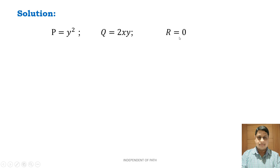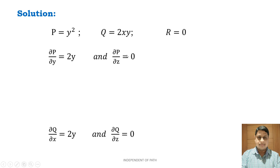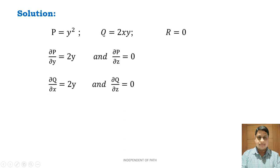Now partially differentiate P with respect to y and z. So ∂P/∂y: differentiating y² gives 2y, and ∂P/∂z = 0 since there is no z term. Similarly, partially differentiate Q with respect to x and z: ∂Q/∂x = 2y (since 2y is constant and x gives 1), and ∂Q/∂z = 0 since z is absent. Partially differentiate R with respect to x and y: ∂R/∂x = 0 and ∂R/∂y = 0.